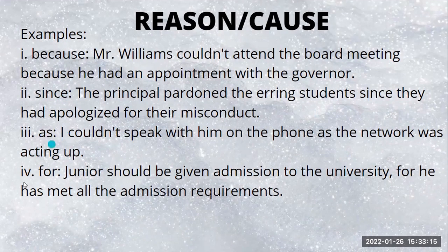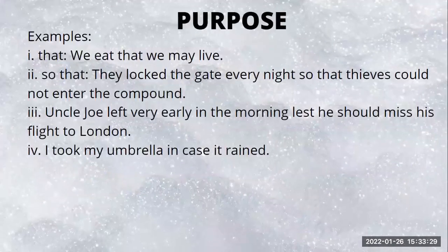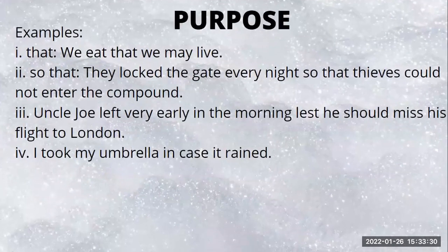Next is 'as': 'I couldn't speak with him on the phone as the network was acting up.' Then 'for': 'Junior should be given admission to the university, for he has met all the admission requirements.' Next we have the subordinating conjunctions of purpose.